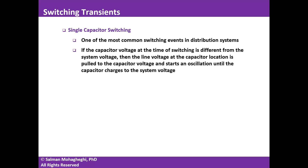We're going to start the discussion by looking at the most common switching event in distribution systems — switching on a single capacitor bank. Let's consider a scenario in which I have a voltage source representing my power system connected to a particular capacitor bank. This is L_S, which is my source inductance, and this is my capacitor.